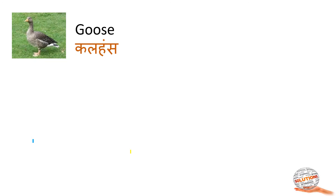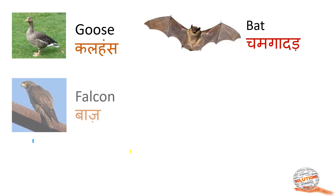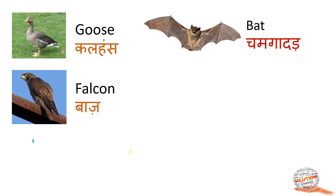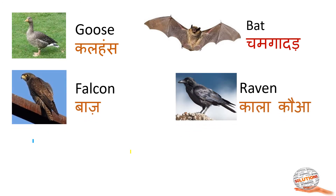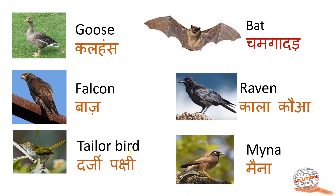Goose — Kalhans. Bat — Chamga. Falcon — Baj. Raven — Kala Kawwa. Tailorbird — Dajji Pakshi. Myna — Maina.